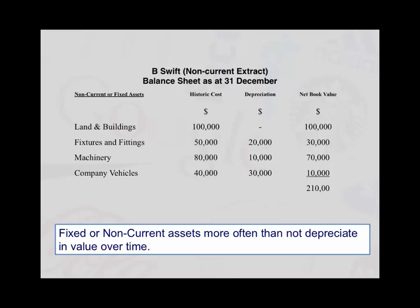You'll notice that the balance sheet is always expressed as at a point in time. A balance sheet is, if you like, a picture in time of everything the business owns — the assets — against where the money came from to buy those assets, i.e. liabilities, money borrowed from outside the company, or the capital invested by the shareholders or the owners.